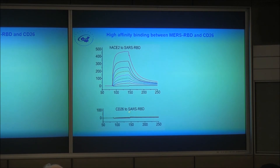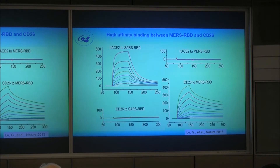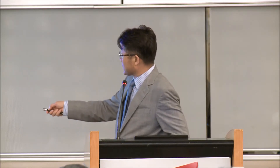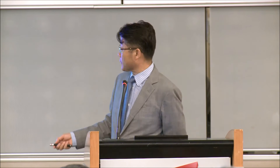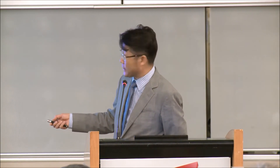SARS RBD doesn't bind to CD26 — that's a good negative control. Human ACE2 shows no binding to the MERS RBD. CD26 is really binding to the MERS RBD — that confirms the interaction. We were lucky enough at that time to get the crystal structure. This is the RBD, and this is CD26 as a dimer expressed on the surface of monocytes, T cells, and macrophages.